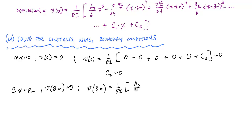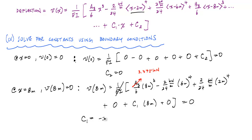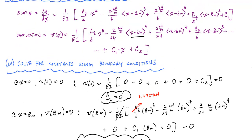Substituting x equals 8 meters into the deflection equation: AY over 6 times 8³, then minus 2 over 24 times (8 − 2)⁴ equals minus 2 over 24 times 6⁴ since 8 > 2, plus 2 over 24 times (8 − 6)⁴ since 8 > 6, plus BY over 6 times (8 − 8)³ which is zero, plus C1 times 8 equals 0. With AY equals 3.375 kilonewtons and C2 equals 0, solving gives C1 equals negative 22.667 kilonewton·meters squared. Substituting C1 and C2 back completes the slope and deflection equations.